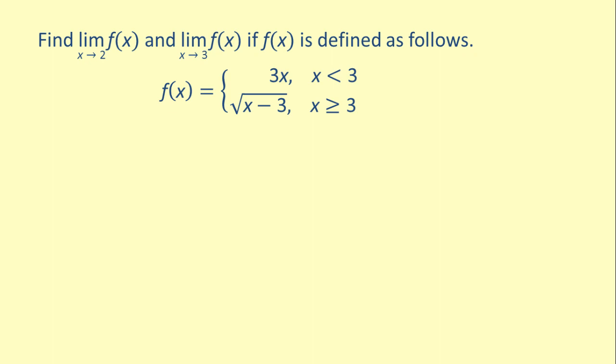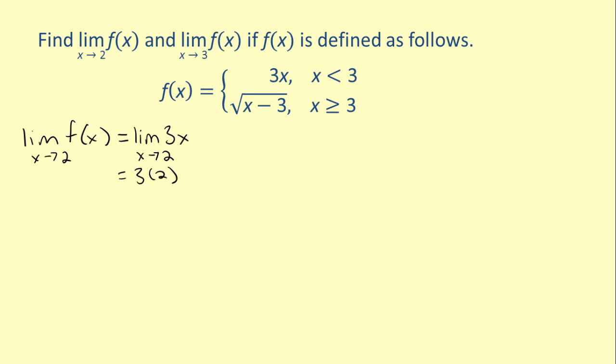We want to first find the limit of f(x) as x approaches 2. In this case, the boundary point is 3. Since 2 is less than 3, we can evaluate the limit for the piece of the function that is defined for x less than 3. So the limit of f(x) as x approaches 2 is equal to the limit of 3x as x approaches 2. We can evaluate this limit using direct substitution. Substituting, we get that the limit is equal to 3 times 2,